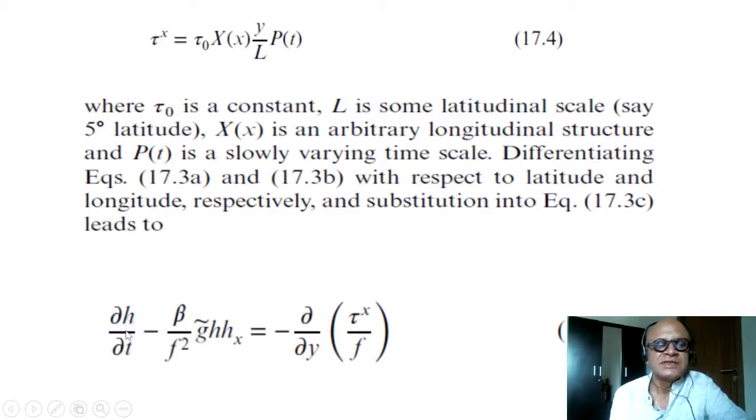We are just going to take this and create dh/dx, this and create dh/dy, and then plug it in to get this equation: dh/dt minus β/f² g̃h hx equals minus d/dy of τx/f, where we have our form of the Ekman transport. If you look at this relation, τx/f—f is βy on the beta plane.